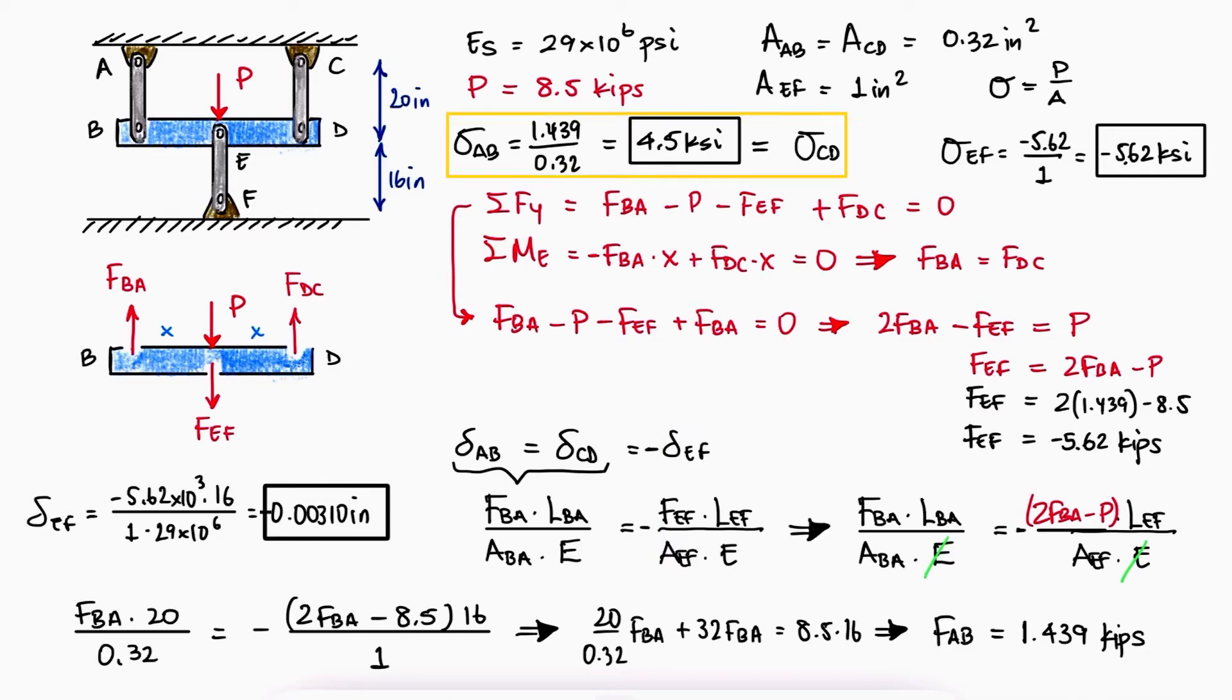Notice that the stress within rods AB and CD are the same, since both the normal forces and their cross-section areas are the same.